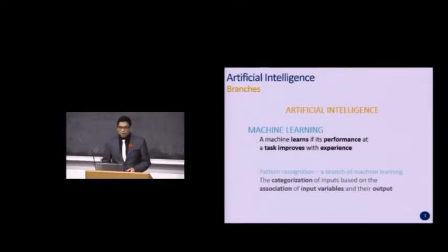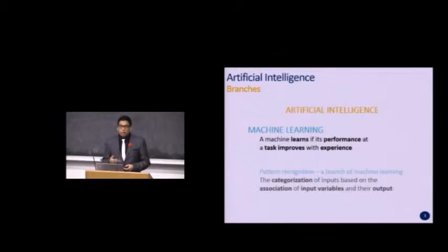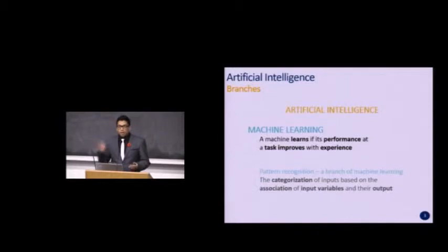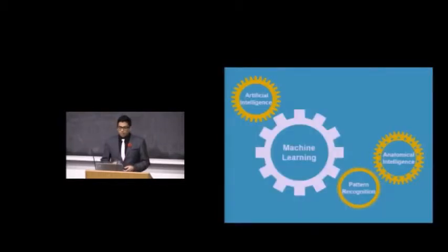One of the ways a machine or software can learn is through pattern recognition, which is a branch of machine learning. Pattern recognition is the categorization of inputs based on the association of input variables and their outputs. Next, Fred will talk about machine learning.